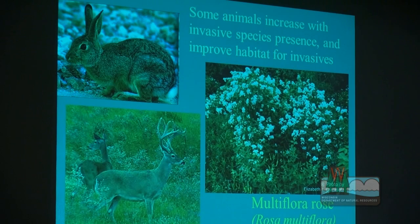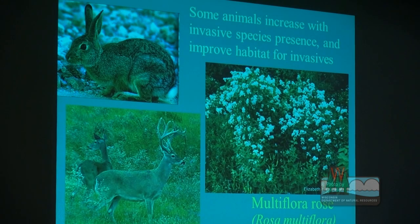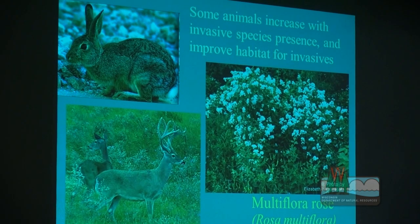Some invasive species like multiflora rose and autumn olive were planted specifically for wildlife. The DNR used to sell autumn olive and multiflora rose, though they stopped quite a while ago. These plants create great habitat for rabbits and deer, and rabbit hunters love multiflora rose. However, rabbits and deer are not the species we really need to be concerned about losing habitat for — there's lots of habitat for these species around the state. Most ecologists will tell you we have plenty of habitat for deer in Wisconsin.